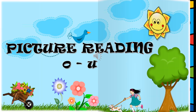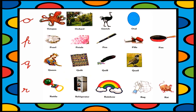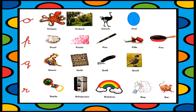O says O. Octopus, orchard, ostrich, oval. O says O. Octopus, orchard, ostrich, oval.